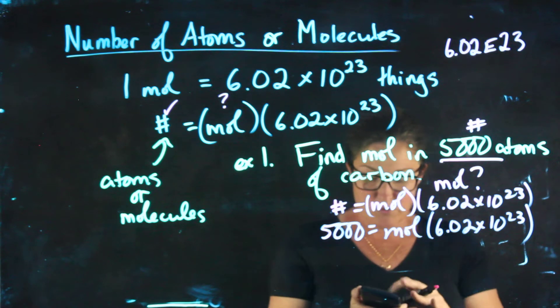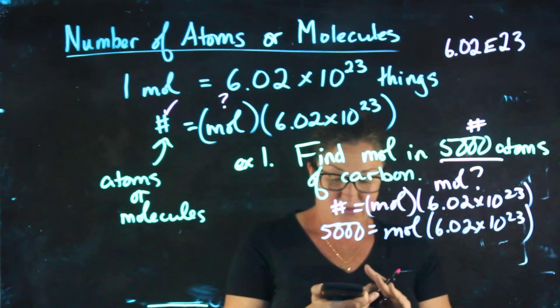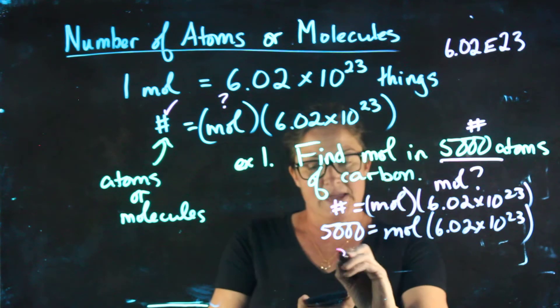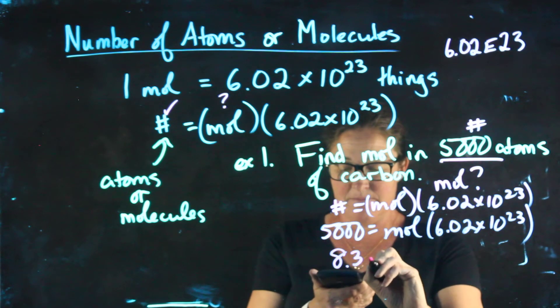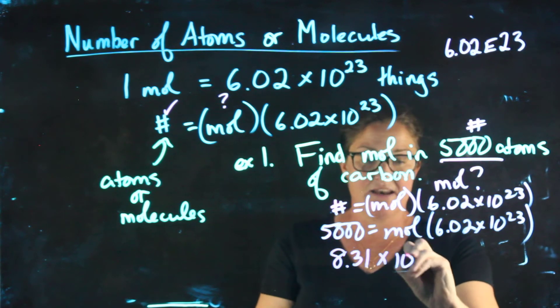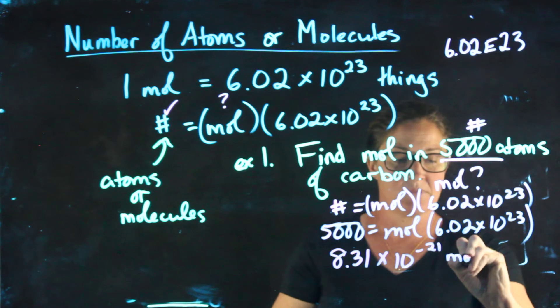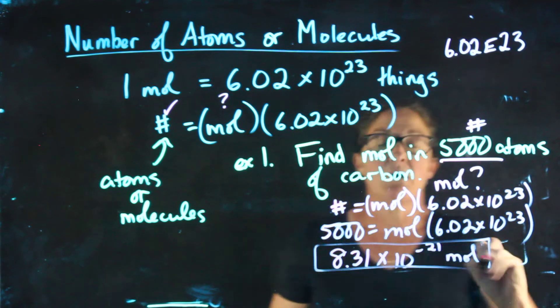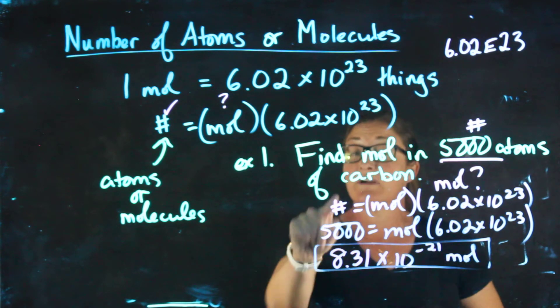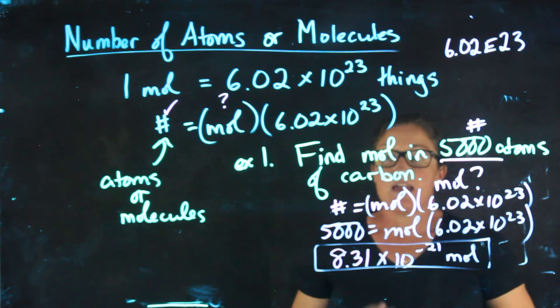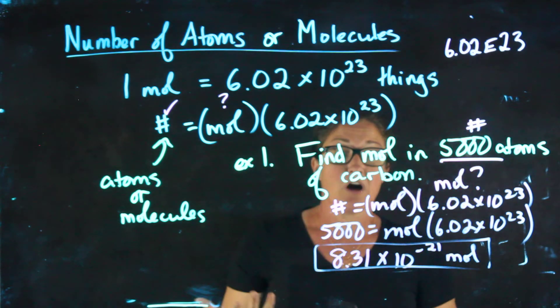5000 divided by 6.02 E23 gives me 8.31 times 10 to the negative 21 moles. Really small number of moles. Really small number of atoms. It's much more likely that we're dealing with a larger number of atoms.